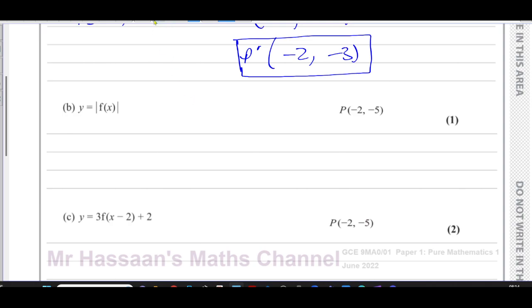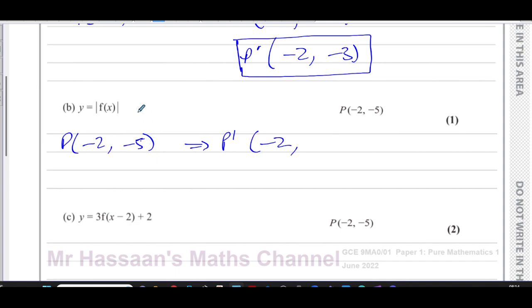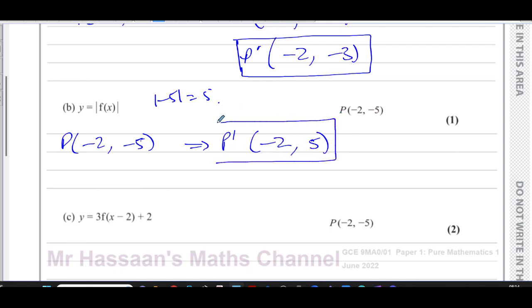If it were f(|x|) that would be a different case — then the x-coordinates would be affected and y-coordinates would not. Here, only the y-coordinates are affected, so the x-coordinate stays as -2. If the y-coordinate is positive it remains unchanged, but our y-coordinate is -5, which is negative, so it changes sign. The modulus of -5 is 5, so the image of P under this transformation is (-2, 5).